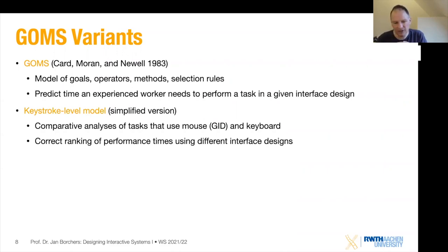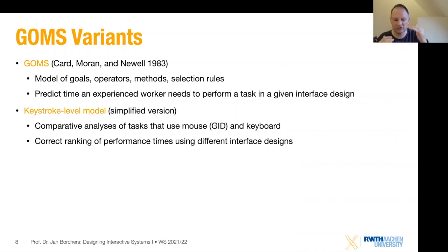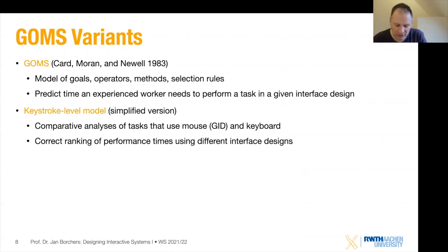Both GOMS and KLM — I wouldn't necessarily trust the absolute numbers precisely, because performance with a mouse could change over time. But what is almost never wrong is the ranking this gives you. You take two interface designs and figure out which one is faster according to the model — that ranking is usually pretty robust. So it helps you make the key design decision: do I use interface design A or B? Maybe A is keyboard-based, maybe B uses the mouse, also known as a graphical input device or GID.